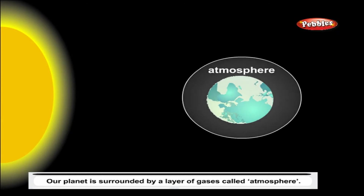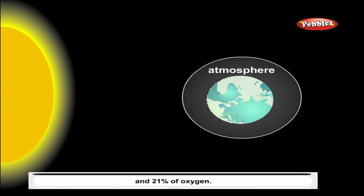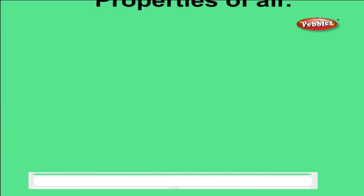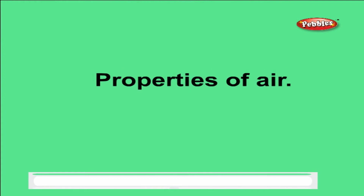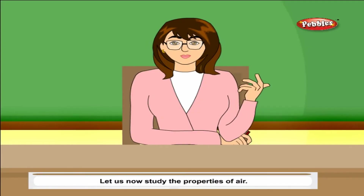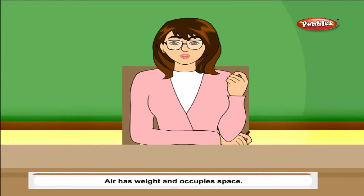Air is a mixture of several gases. Our planet is surrounded by a layer of gases called the atmosphere. The atmosphere contains 78 percent nitrogen and 21 percent oxygen. Let us now study the properties of air.